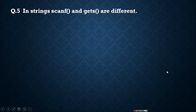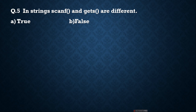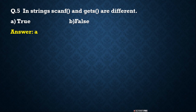The next question: in string, scanf and gets are different. scanf means when we are reading data from the keyboard, we use scanf. Similarly, gets is there to read data. But in string, it is different because scanf can't read a multi-word string. When you enter a name like 'Pooja Roar', scanf will accept only 'Pooja'. But gets can accept 'Pooja Roar' because gets accepts a multi-word string.